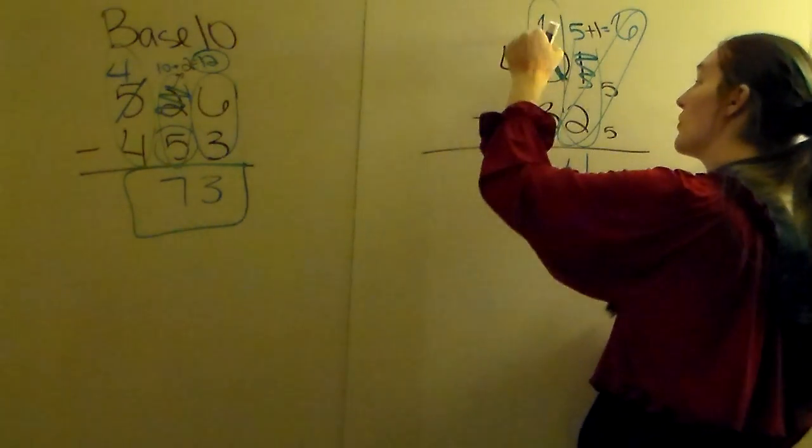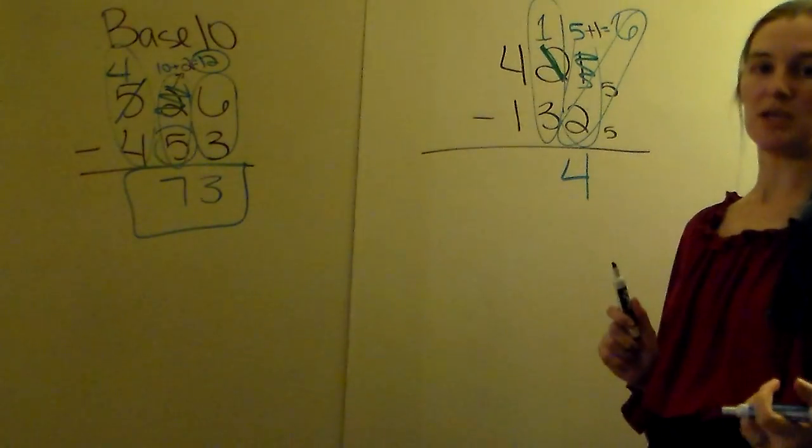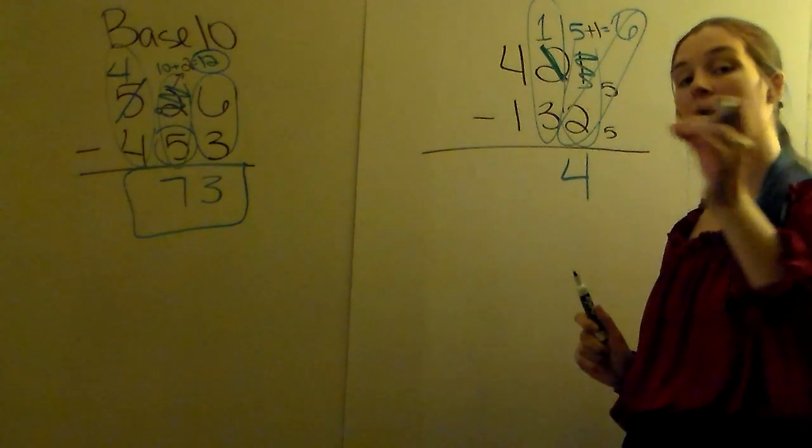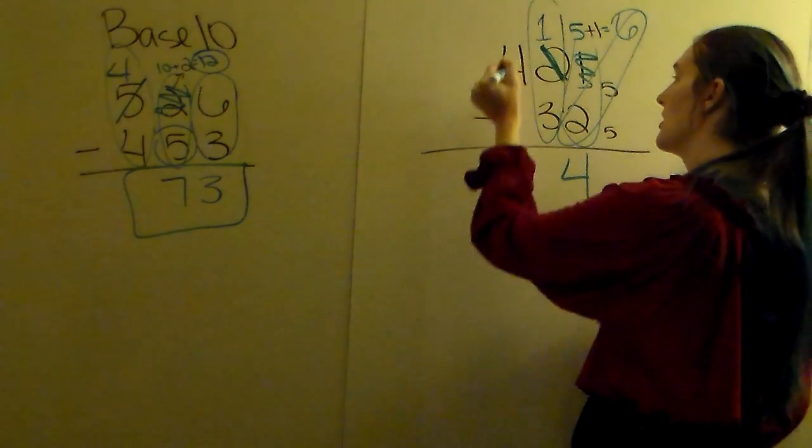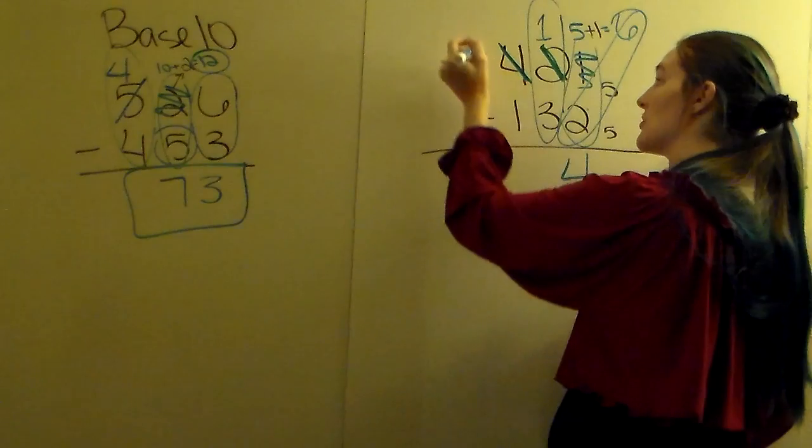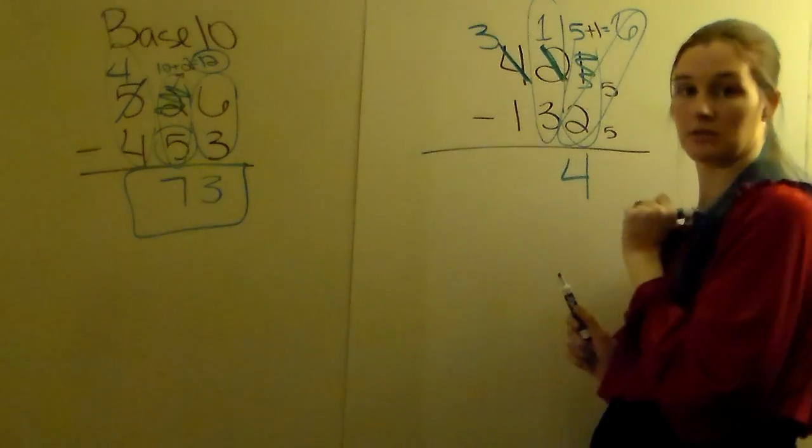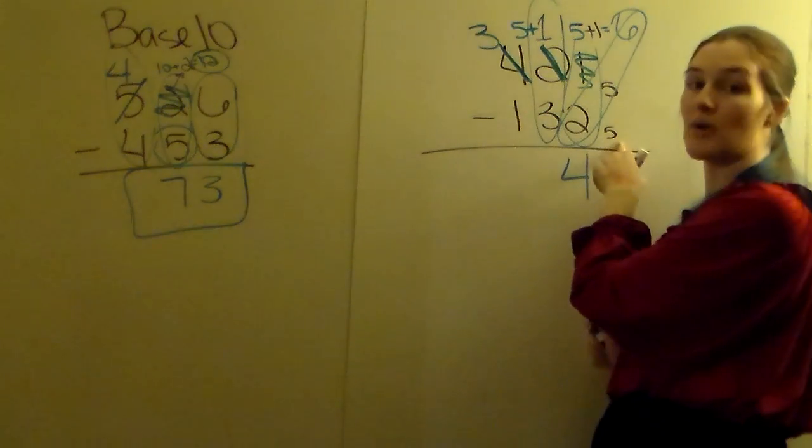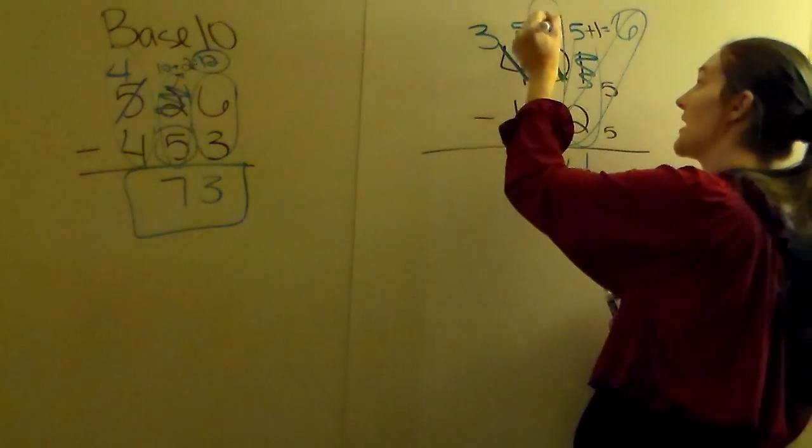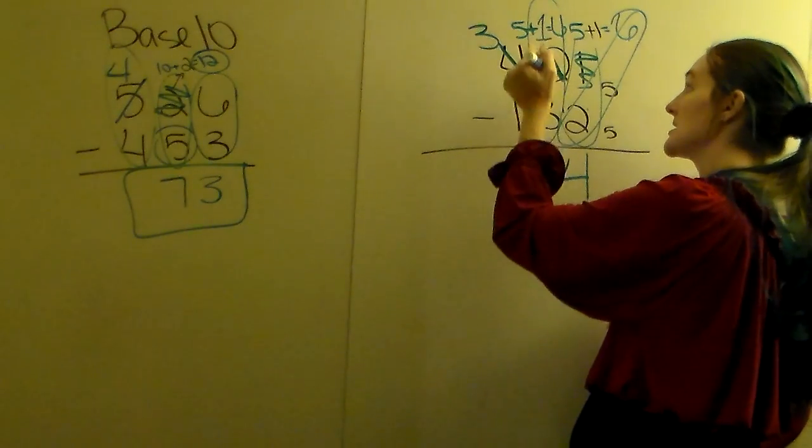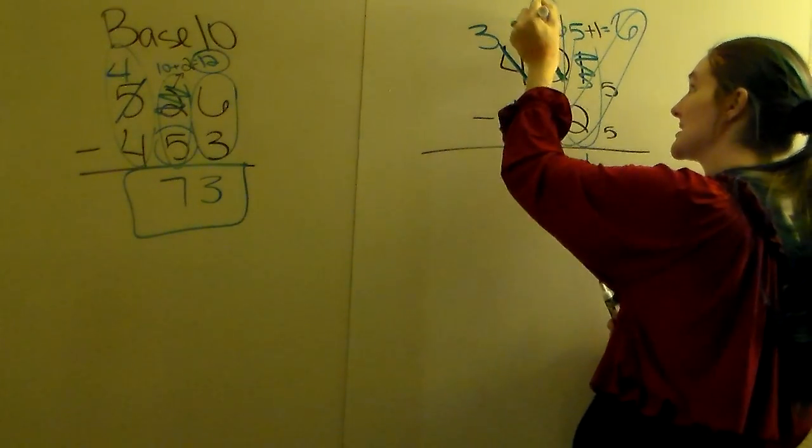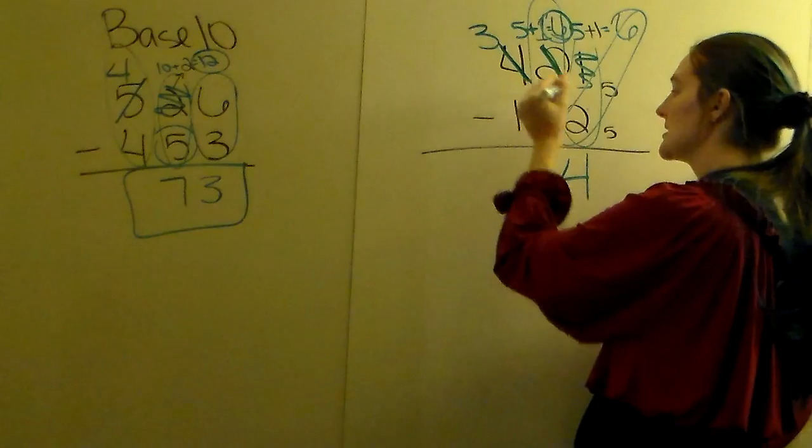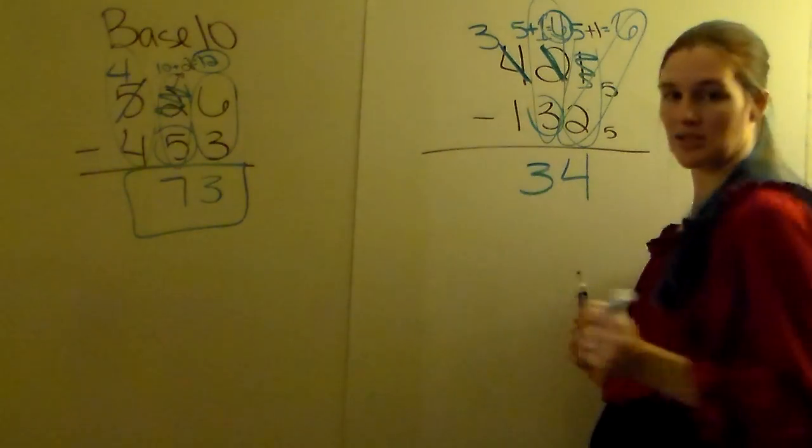Next column, 1 minus 3 would still give me a negative number. So I have to borrow again. From the 4, I take 1 away, making it 3. To the 1, I add the base—always the base. 5 plus 1 is 6. So instead of 1, I'm doing 6 now. 6 minus 3 gives us 3.